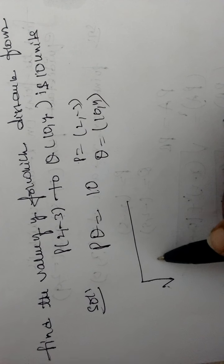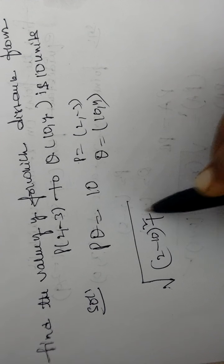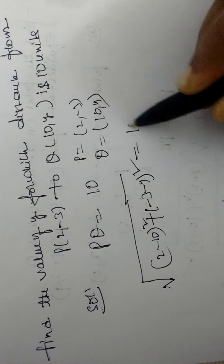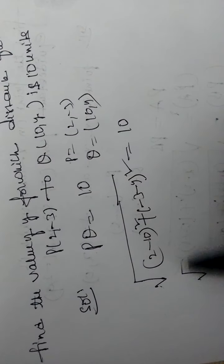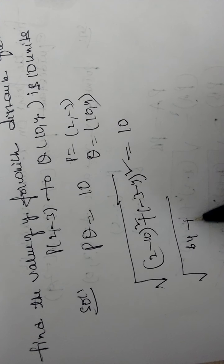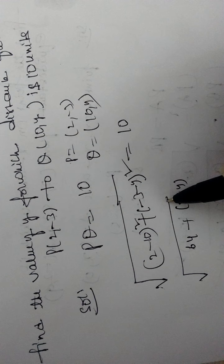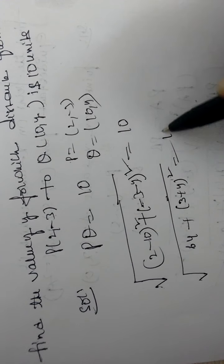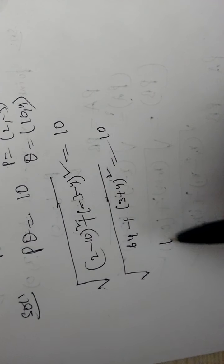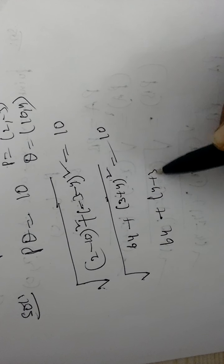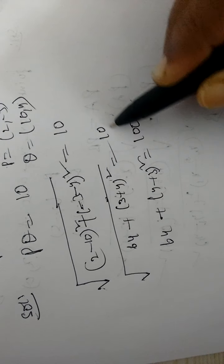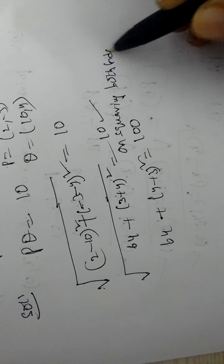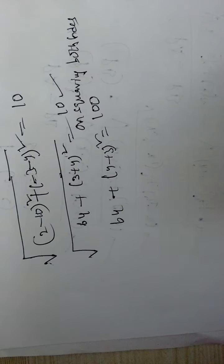Under root (2 minus 10) whole square plus (minus 3 minus y) whole square is equal to 10. 2 minus 10 is minus 8. Minus 8 square is 64. Minus common, minus 3 plus y. Square on both sides. On squaring both sides we get 100.